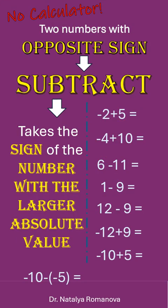The second case: When the numbers have different signs, subtract the smaller absolute value from the larger one and take the sign of the number with the greater absolute value.